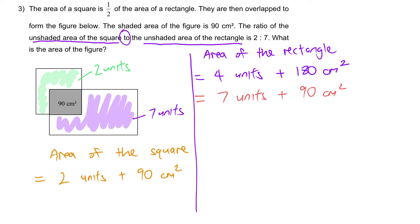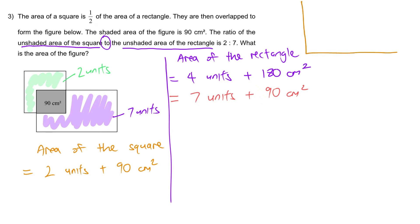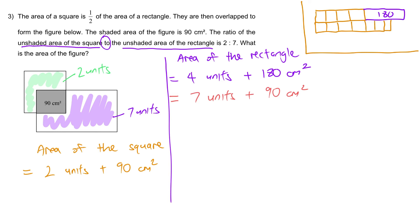If you need, you can draw out the model. In model terms, the first row shows 4 units plus 180, and the second row shows 7 units plus 90 — they are equal in length. So what can we say? Looking at both rows, we can compare them.